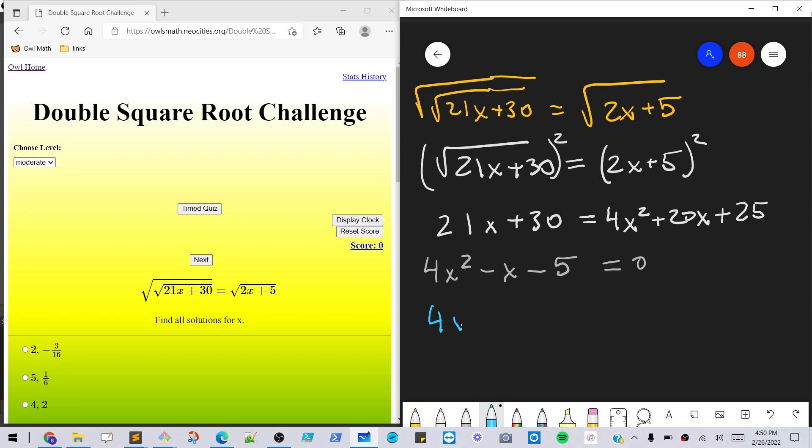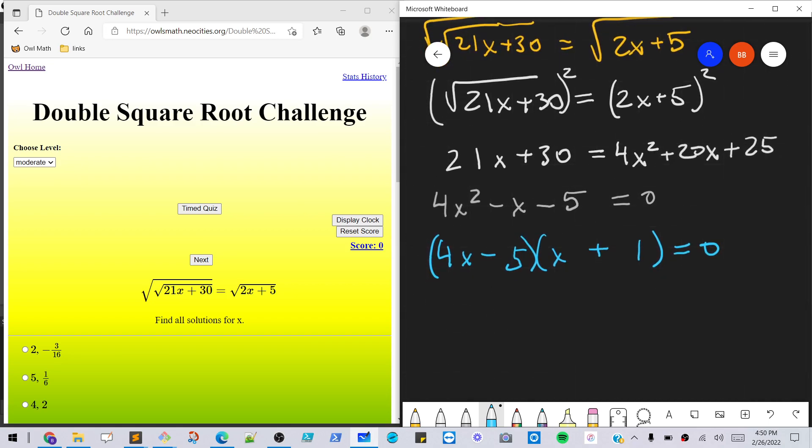Let's try it like this, so we'll say 4x. So we'll look at it like that, 4x times x is 4x squared, and then we'll do 5 here or 1 here. Does that look good? Yep, that looks good. So we have this factorization, so that gives us two answers for x, so we have x equals 5 fourths and x equals negative 1.